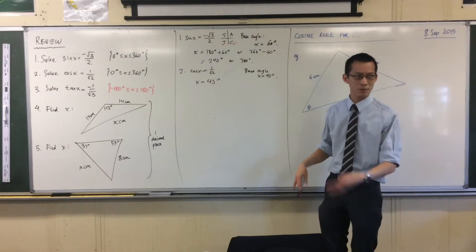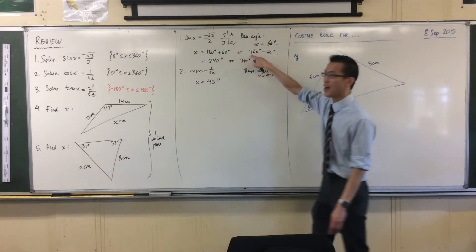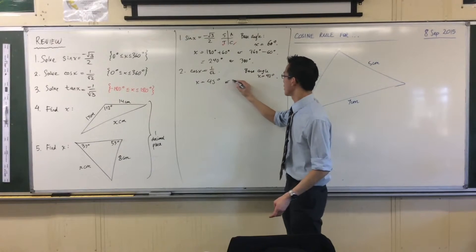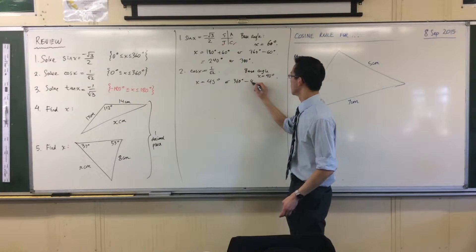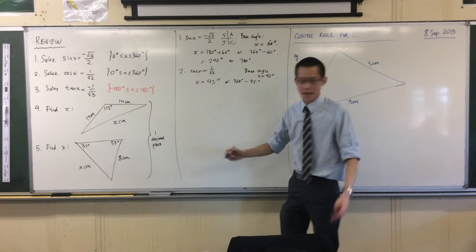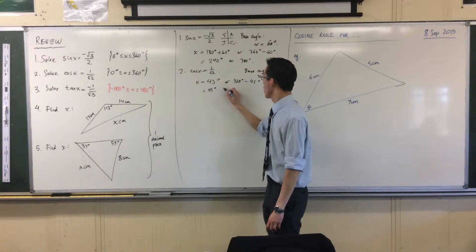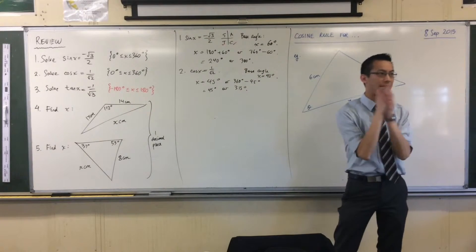So what does that look like in the first and fourth quadrants? The first quadrant is just 45, okay? We just did a fourth quadrant angle. What do I do with the fourth quadrant? 360 take away. So again, there's my two solutions: 45 or 315.